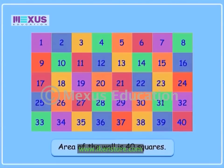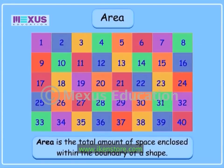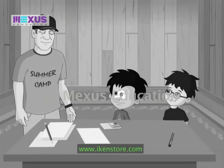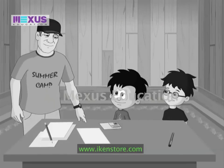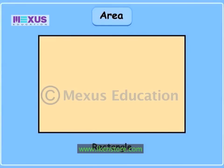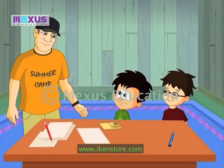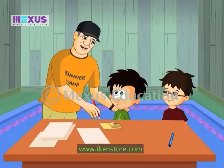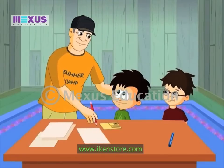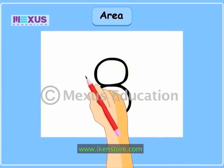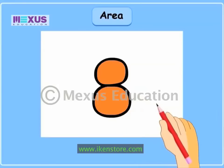Area? Yes. Area is the total amount of space enclosed within the boundary of a shape. Look here — this piece of paper has the shape of a rectangle. The coloured part inside the boundary is the area of this rectangle. Let me show you another example. I am drawing this number 8. Let me shade the space inside its boundary. This is its area. Did you understand?